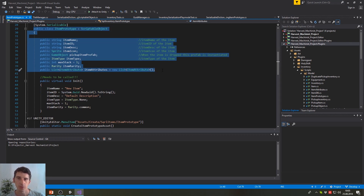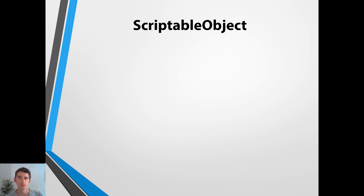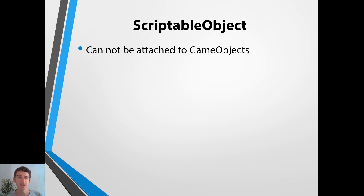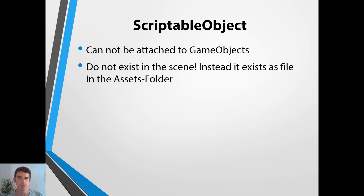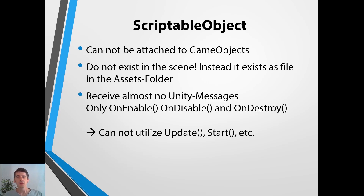We're going to create our own ScriptableObject in just a moment. Right now we're doing a little bit of theory. So let's look at a few characteristics of ScriptableObjects. First of all, they cannot be attached to game objects and they do not exist in the scene. Instead, they usually exist as a file in the assets folder — I really recommend doing that, because if you instantiate them during runtime, you might run into issues. Also, ScriptableObjects receive almost none of the Unity messages — they only get OnEnable, OnDisable, and OnDestroy.